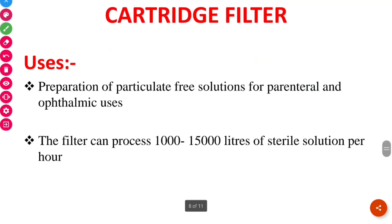The important uses of cartridge filter: it is used for the preparation of particulate-free solutions for parenteral and ophthalmic use. By using this type of filter, we can process 1000 to 15000 liters of sterile solution per hour.